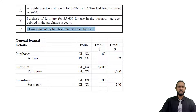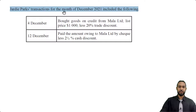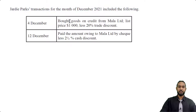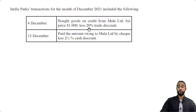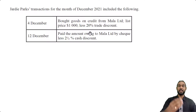Now let's take a look at the next part of the question. JD Parks' transactions for the month of December 2021 included the following. On the 4th of December, bought goods on credit from Marla Limited, list price $1,000 less 20% trade discount. Trade discount is not recorded — it's simply subtracted from the list price and the net amount on the invoice is what is used to record the transaction in the books.